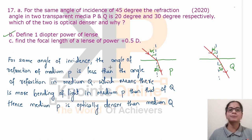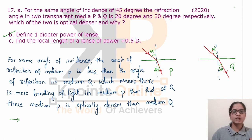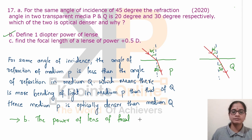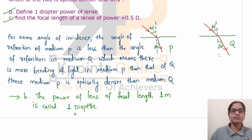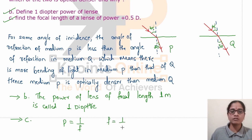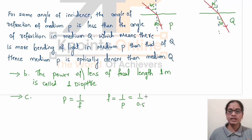Define one diopter power of a lens, and find the focal length of a lens of power +0.5 diopter. One diopter is defined as the power of a lens whose focal length is 1 meter. To find focal length: P = 1/F, so F = 1/P = 1/0.5 = 2 meters. The focal length of the lens is 2 meters.